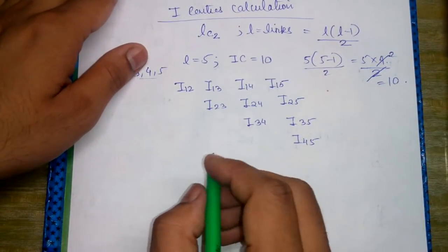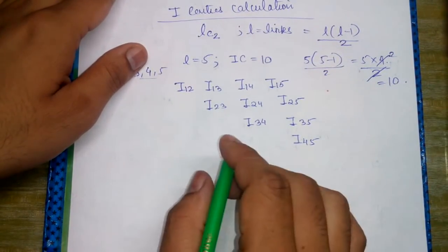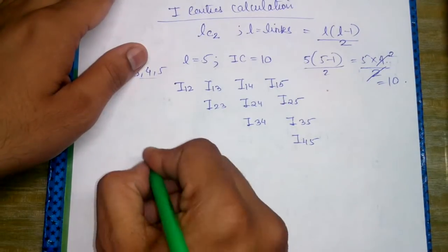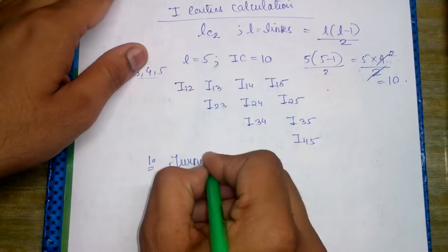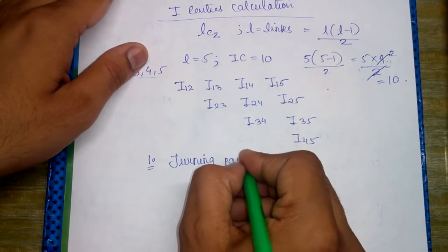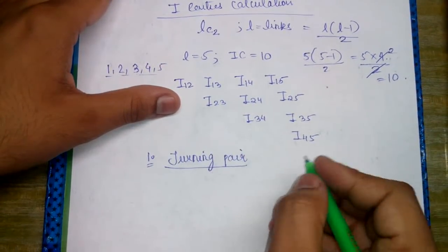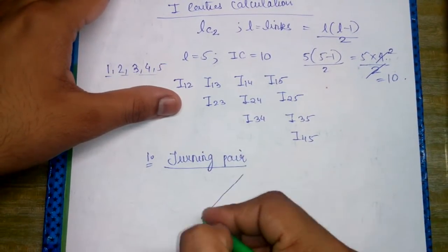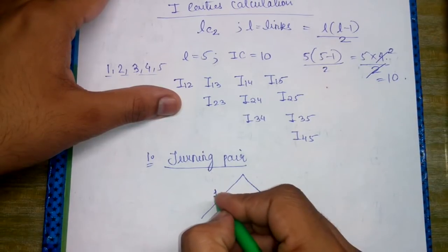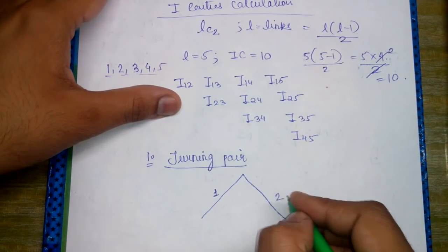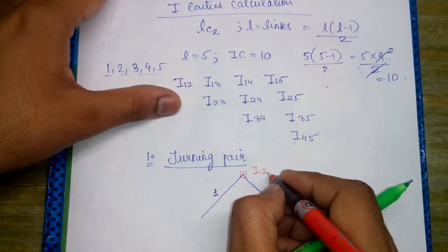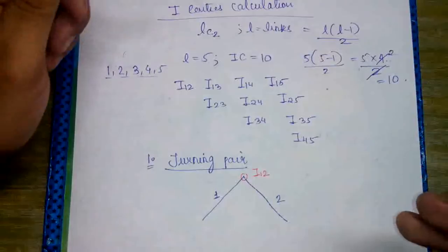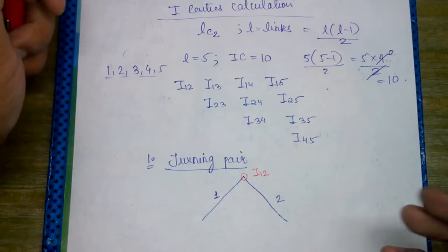Now we discuss the basic instantaneous centers in a mechanism. For a turning pair with link 1 and link 2, the I-center I12 is at the pin joint itself.